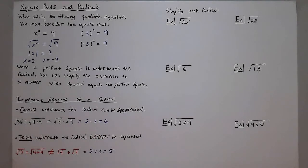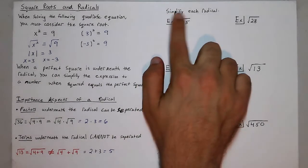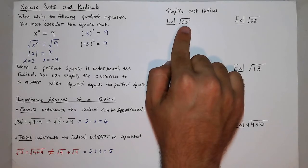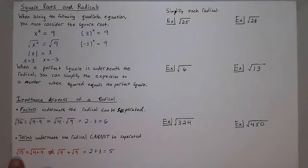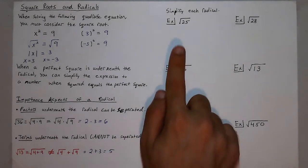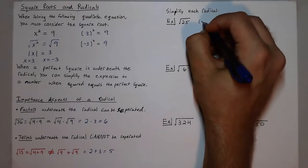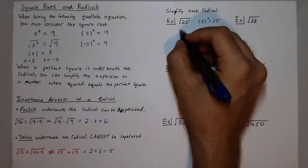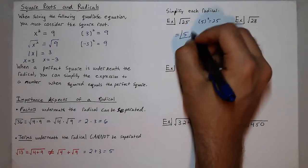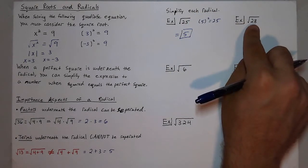So let's simplify each of these radicals. We have the square root of 25 — the square root of 25 is 5 because 5 squared is equal to 25, so the answer is simply 5.